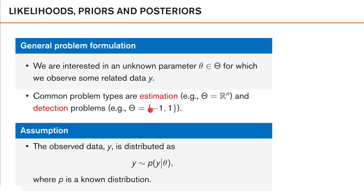The key assumption in all these problems is that we assume the observed data, y, is distributed according to a known conditional distribution, where we express the observed data y conditioned on the parameter of interest, theta. For example, let's say y is an observation from a radar measuring the distance to an object, and theta is the actual distance to the object. With this model, we describe the distribution of the radar detection when we know the distance to the object — that is, how we expect the observation to behave when we know the true value of theta.